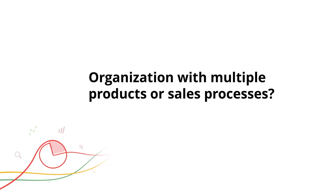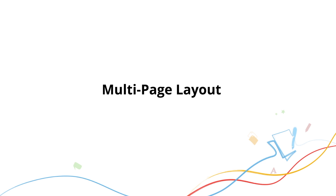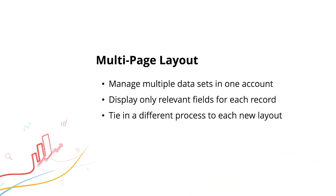What if your organization has multiple products or sales processes? For example, at T&E we not only sell cars but buy them as well. This is a great segue into multi-page layouts, which allow you to manage multiple data sets in one account. You can display all the relevant fields in each particular layout, helping you further organize your data. I wouldn't want to create another module for sellers because there would be a lot of redundant modules, and I also wouldn't want all those buyer and seller fields in one cluttered layout.